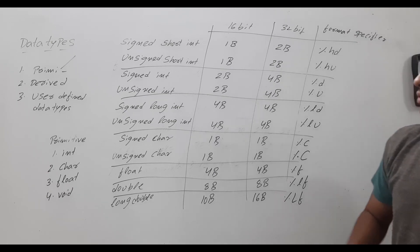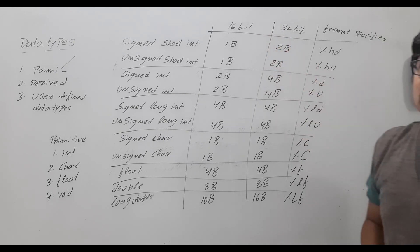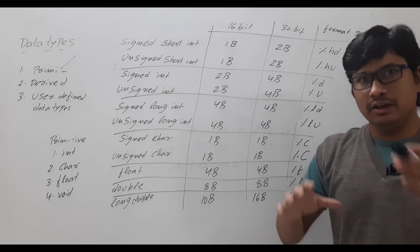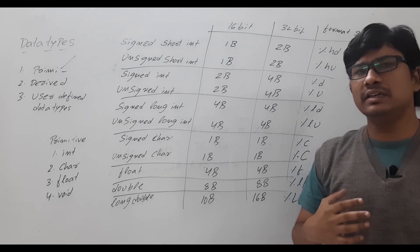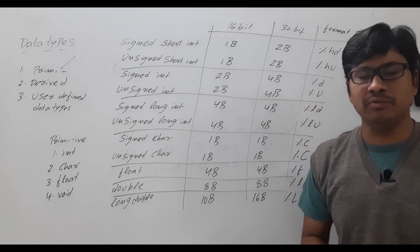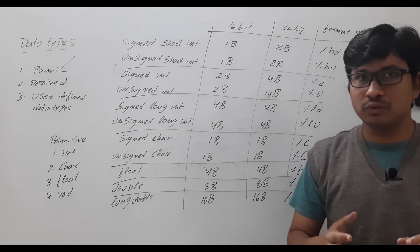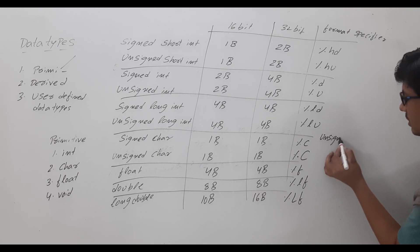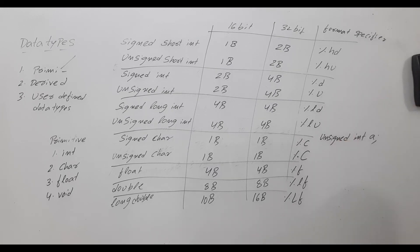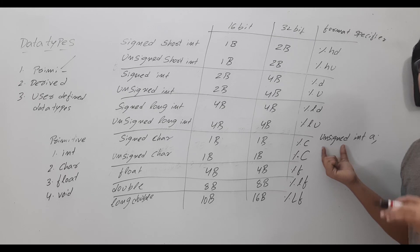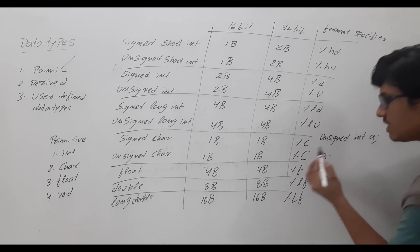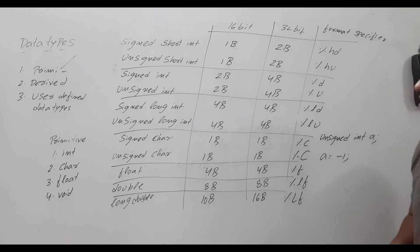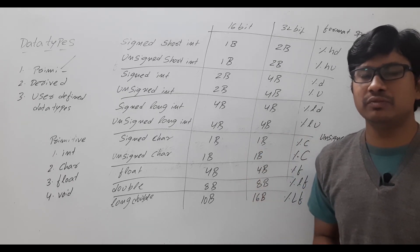This covers the various data types, their ranges, and format specifiers. In the next video I will discuss signed int versus unsigned int in more detail. Signed int can store both negative and positive numbers, while unsigned int stores only positive values. If you declare an unsigned int and assign a negative value like -1, what happens? We will discuss all of this in the next video. Thank you for watching, have a nice day.